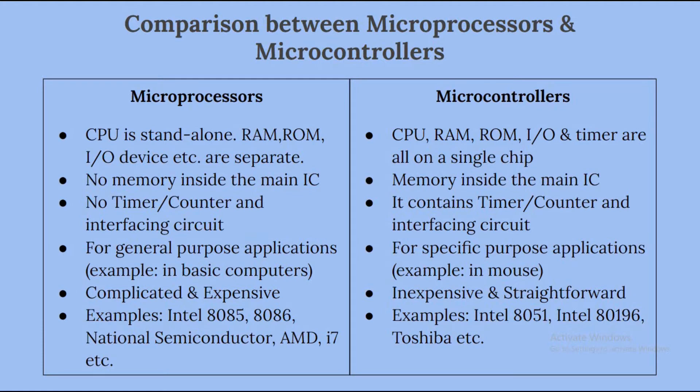An integrated circuit is a single package which consists of various transistors, resistors, capacitors, diodes, etc. In microprocessors there is no timer, counter, or interfacing circuit. But in microcontrollers there is a timer, counter, and interfacing circuit.